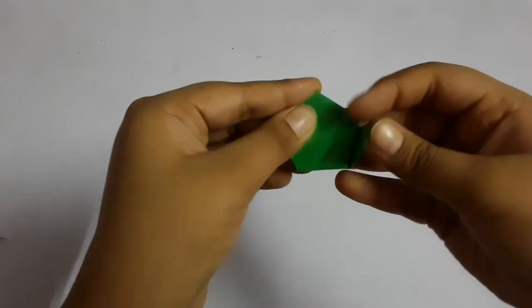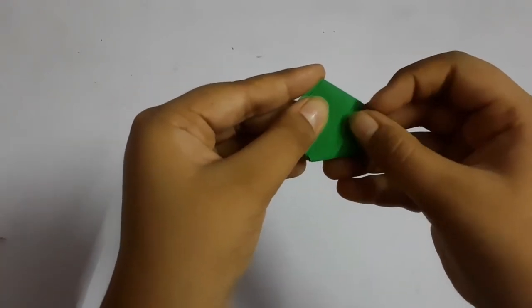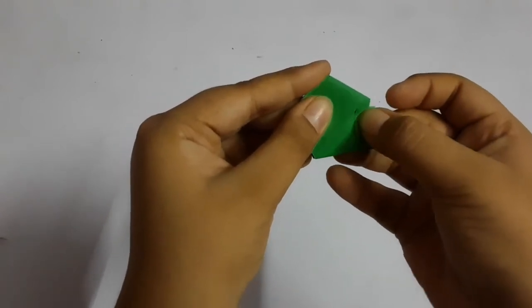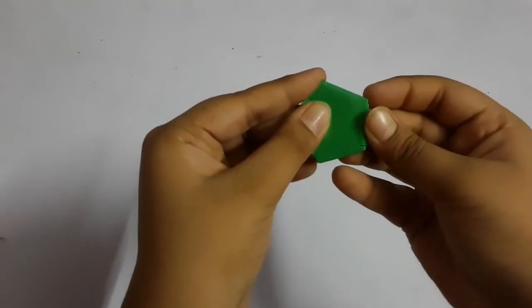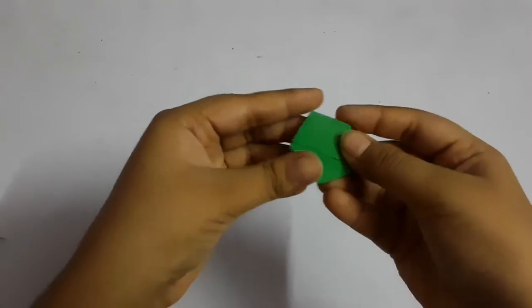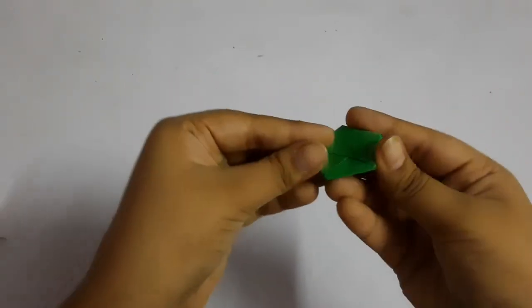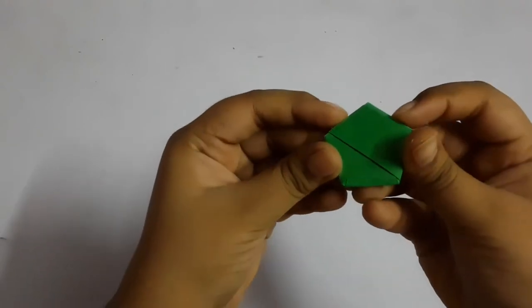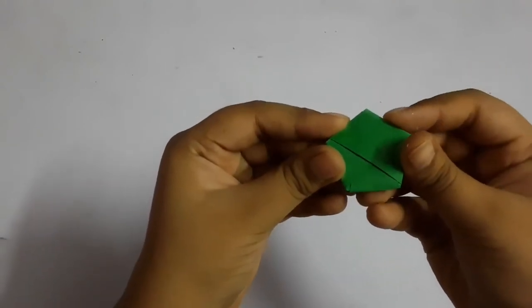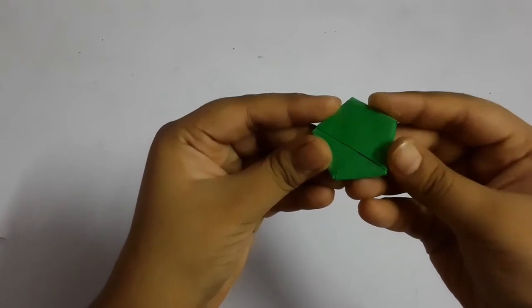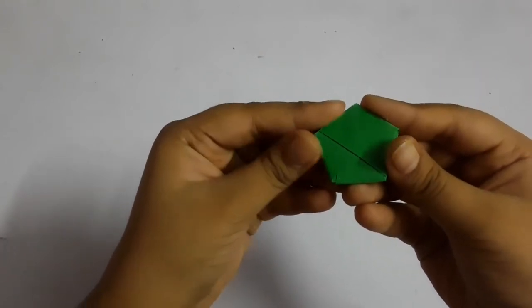Now we have space here, you can see this space. Now we will insert this strip inside both of these as shown like this. Now we will make it a 3D star. First we have to apply force here, here, here, here, here, and here.